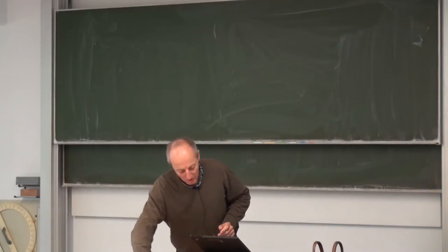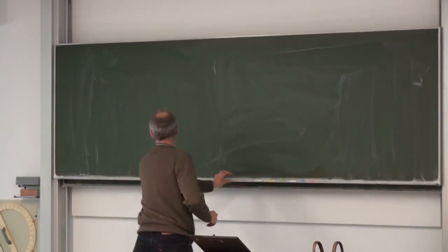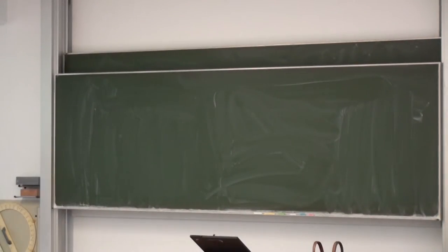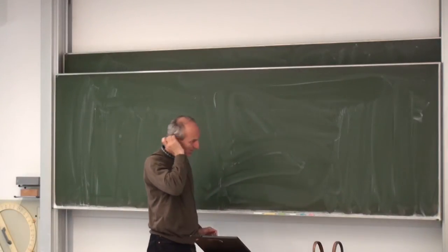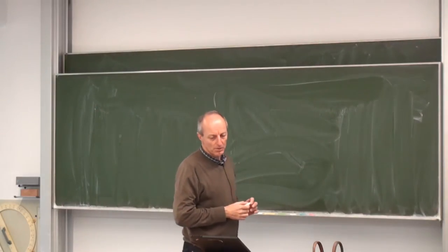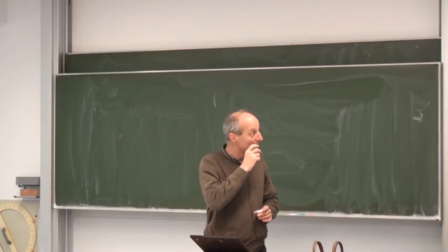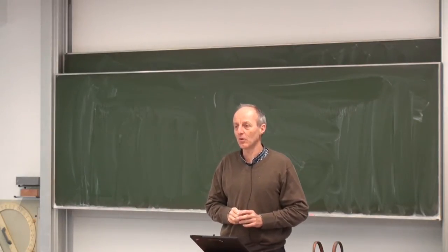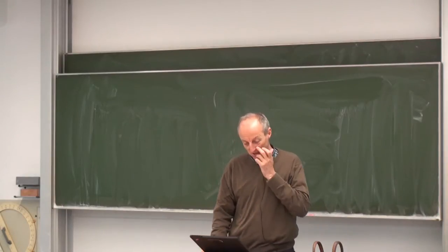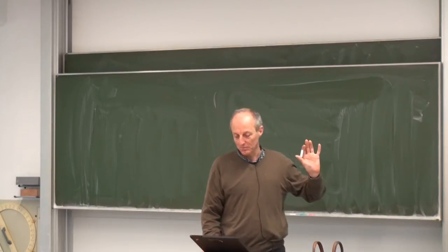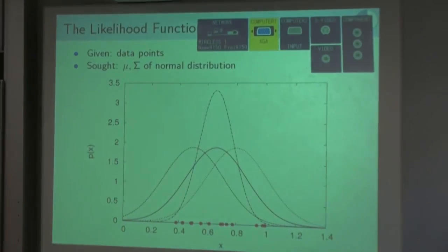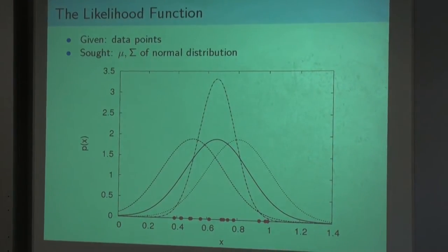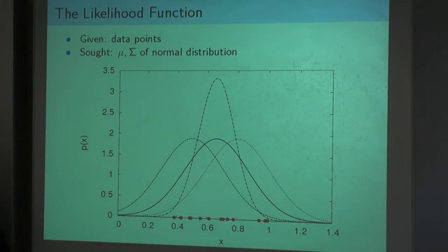Let me start on the blackboard. What did we do last week? We talked about estimating the parameters of a normal distribution given some data points. We talked about marginal and conditional Gaussian distributions. What we do now is talk about Gaussian distributions again — given a set of data points, we are looking for a normal distribution that fits these data points best.